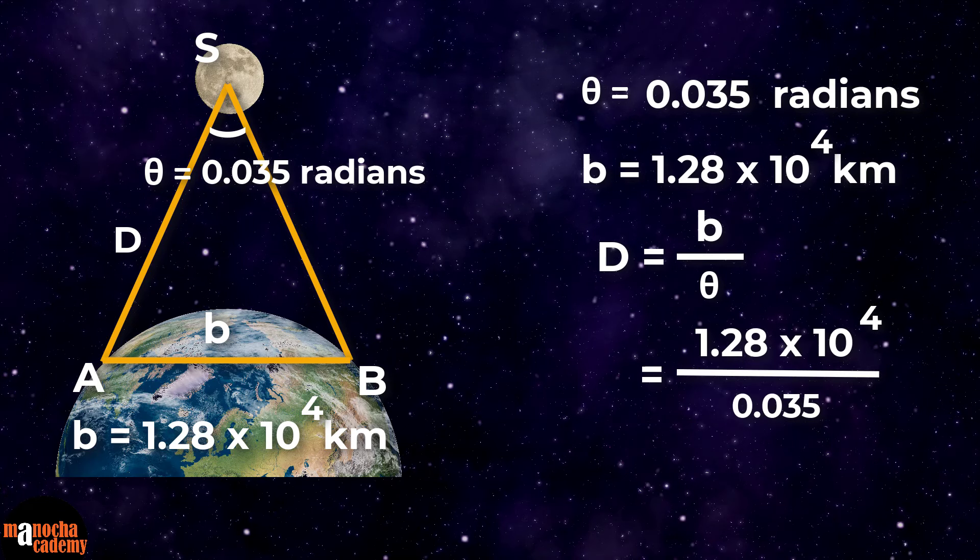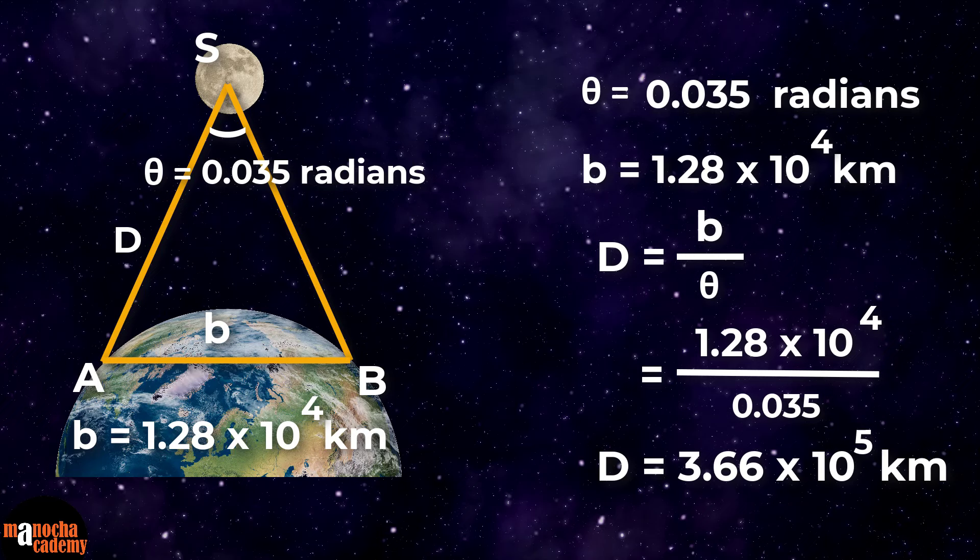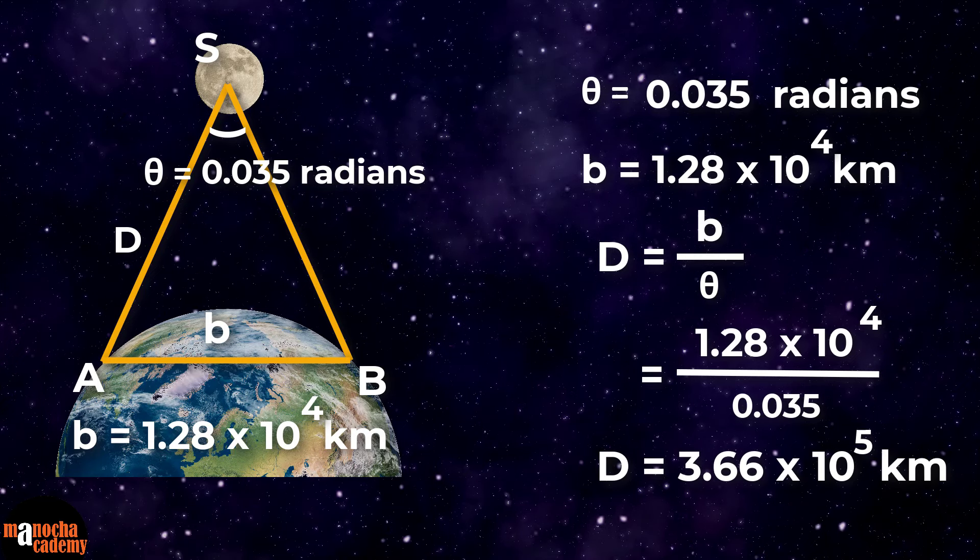So use the formula capital D is B by theta to calculate the distance of the moon. So when you substitute the values, you will find that the distance of the moon is 3.66 times 10 to the power 5 kilometers.